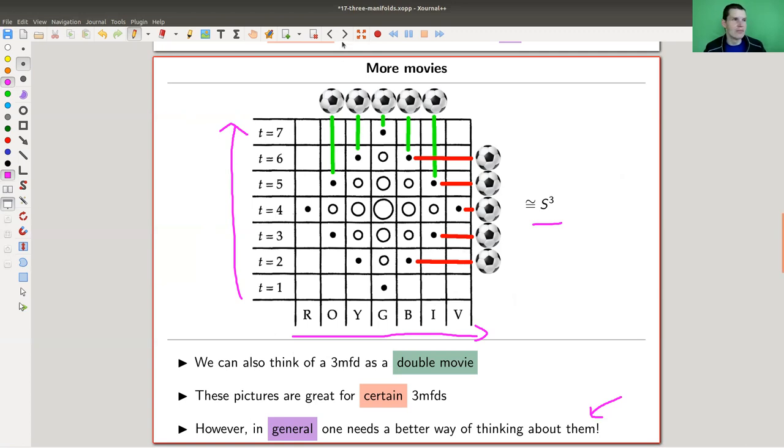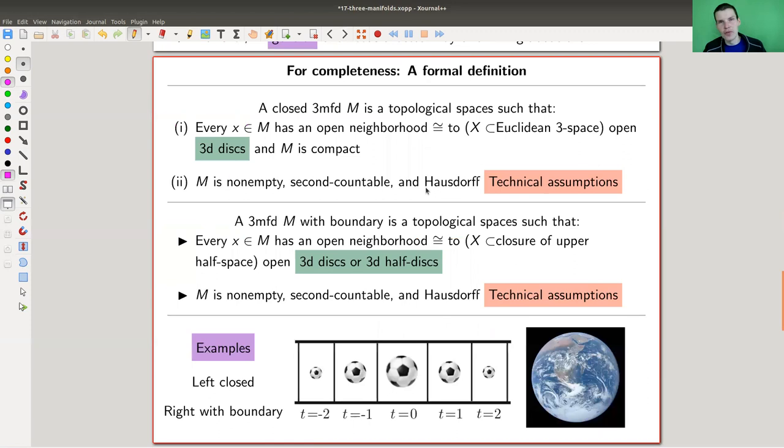Let's go to the formal definition. There are two definitions, the one without a boundary so the closed one and the one with a boundary. It's the following definition—there's some technical assumptions, ignore the technical assumptions. The point is every point here has a local neighborhood isomorphic to a disk.